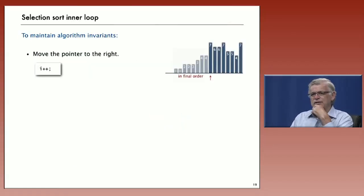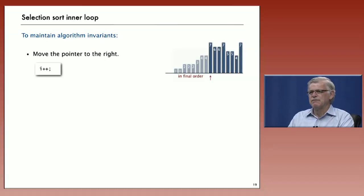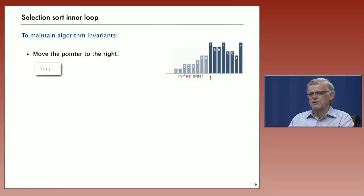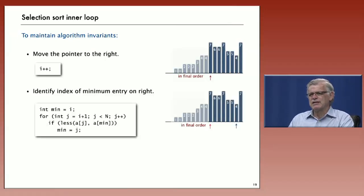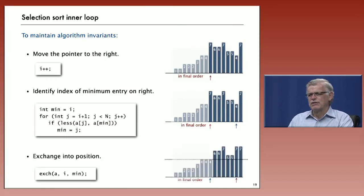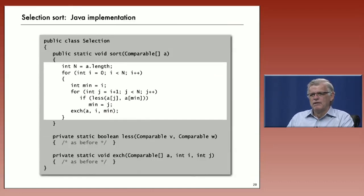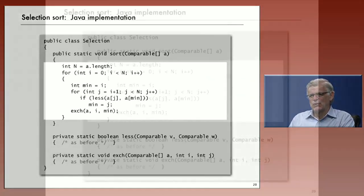The code implements the invariants. To move the pointer to the right, we increment i — now the invariant might be violated because you might have an element to the right of the pointer that is smaller than the element on the pointer. So what we have to do is identify the index of that minimum entry and exchange it. Once we've exchanged it, we've preserved our invariant. After that point, no element to the left of the pointer is going to change and there's no smaller element to the right, and that gives us immediately our code for the selection sort implementation.